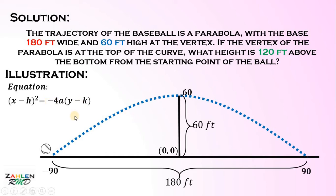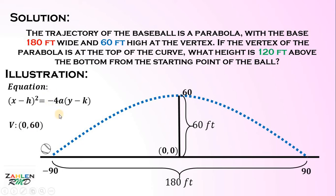Now let's move on. The vertex is at the top of this parabola, having the coordinates 0, 60. In our equation, h equals 0 and k equals 60. Our goal is to find the value of a. To get the value of a, we need a point on this parabola. We will use the point 90, 0, which serves as x and y.